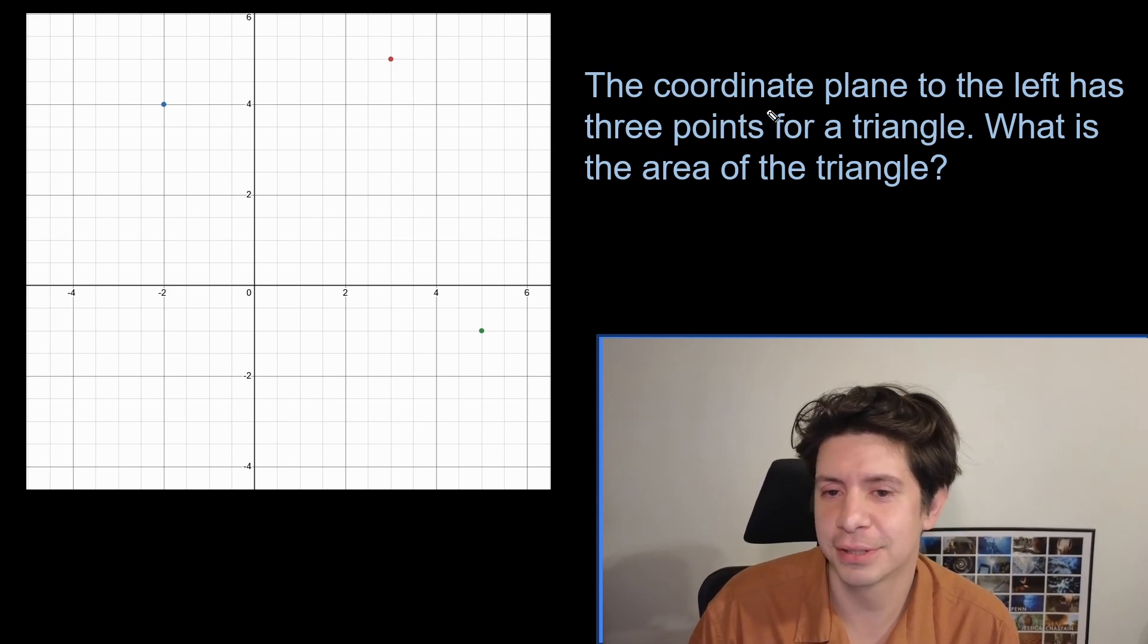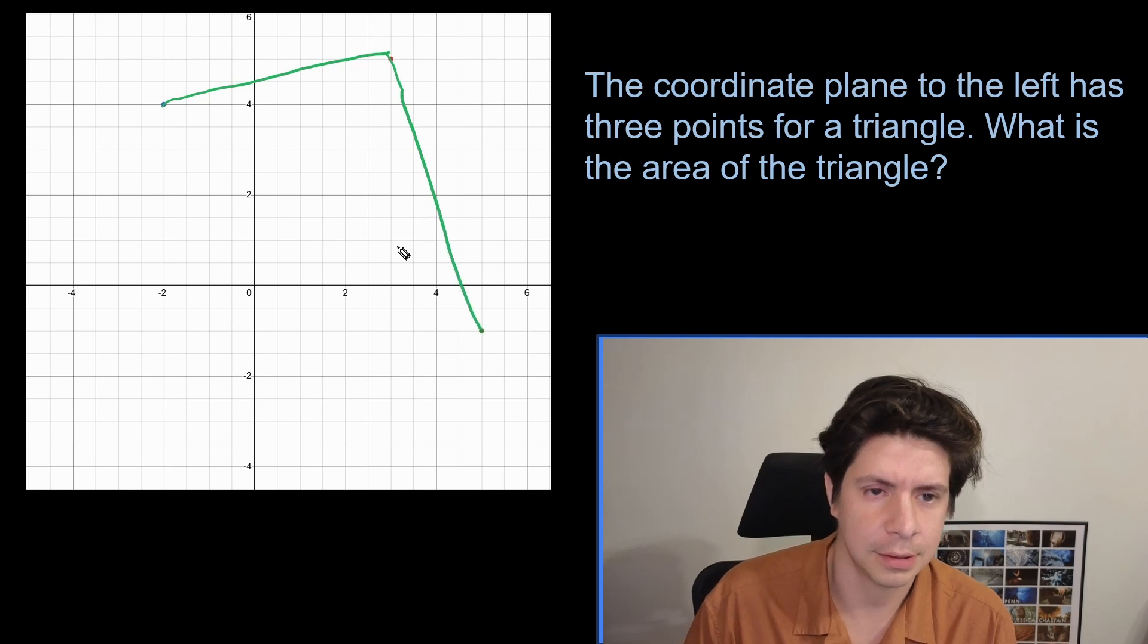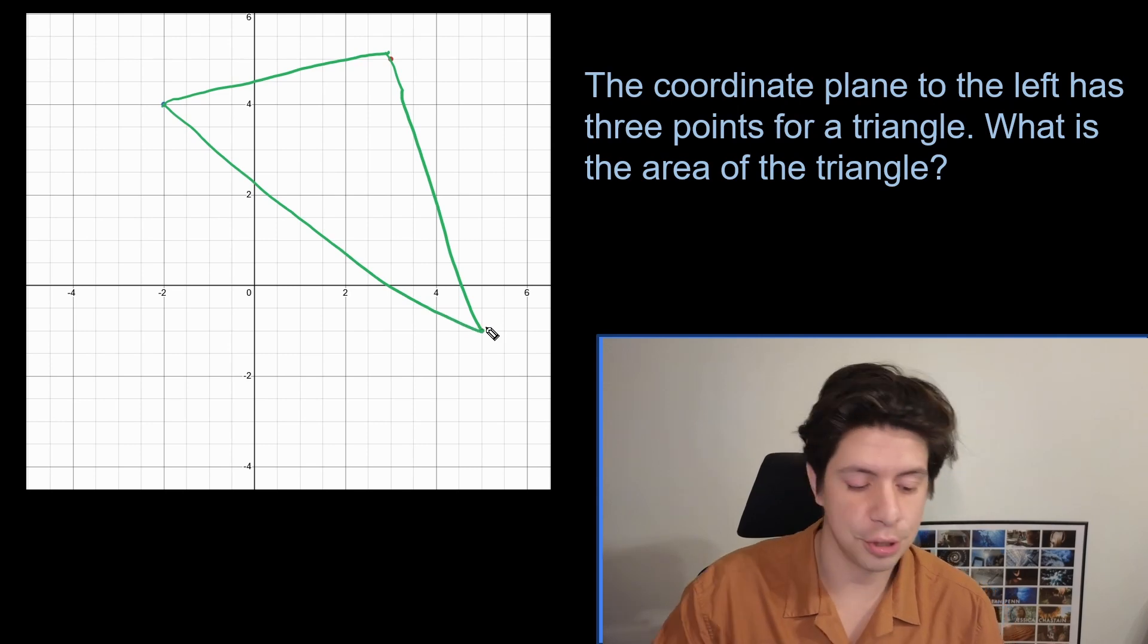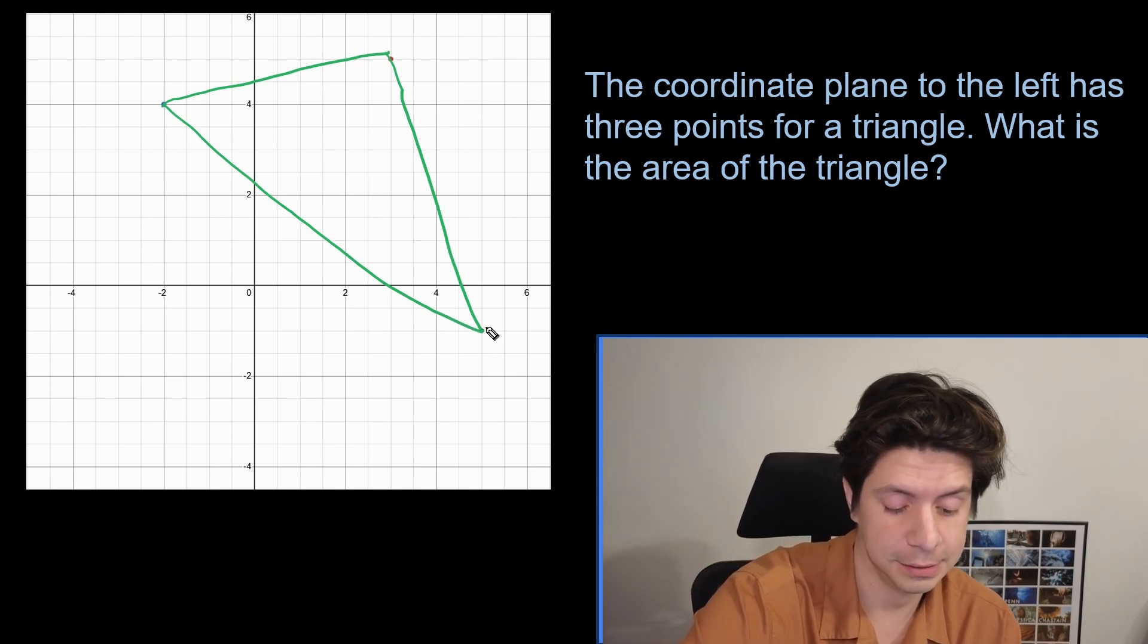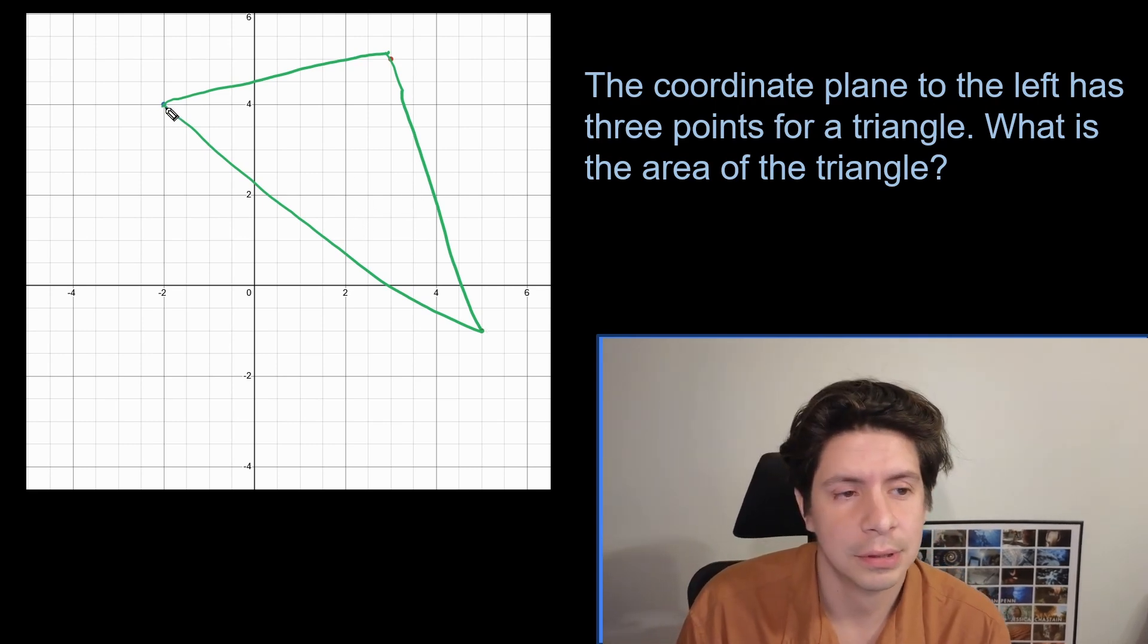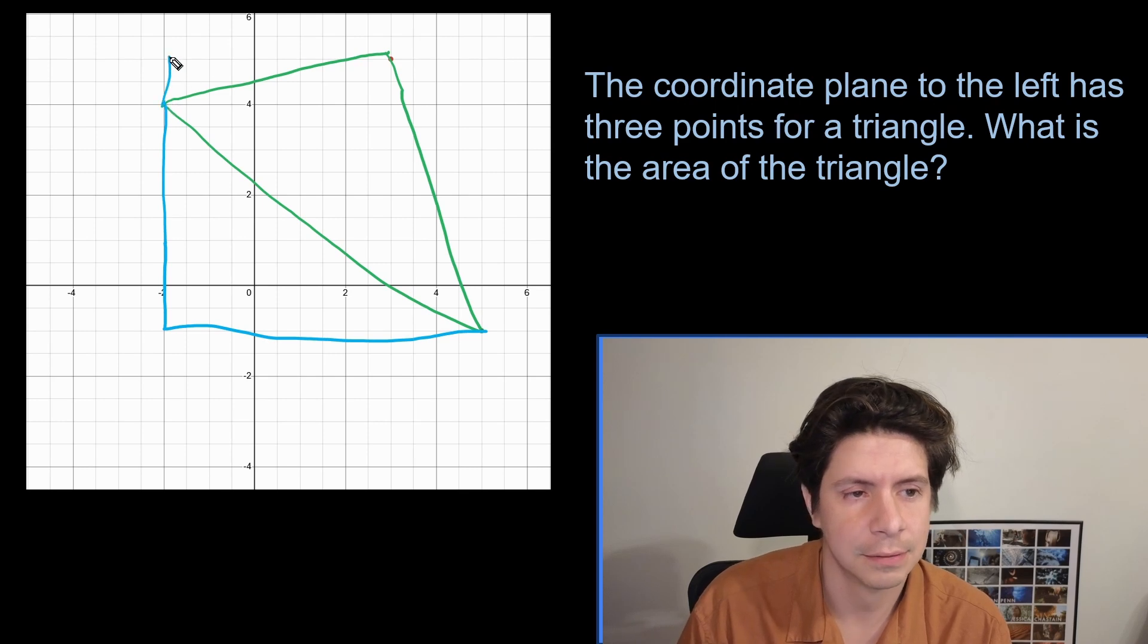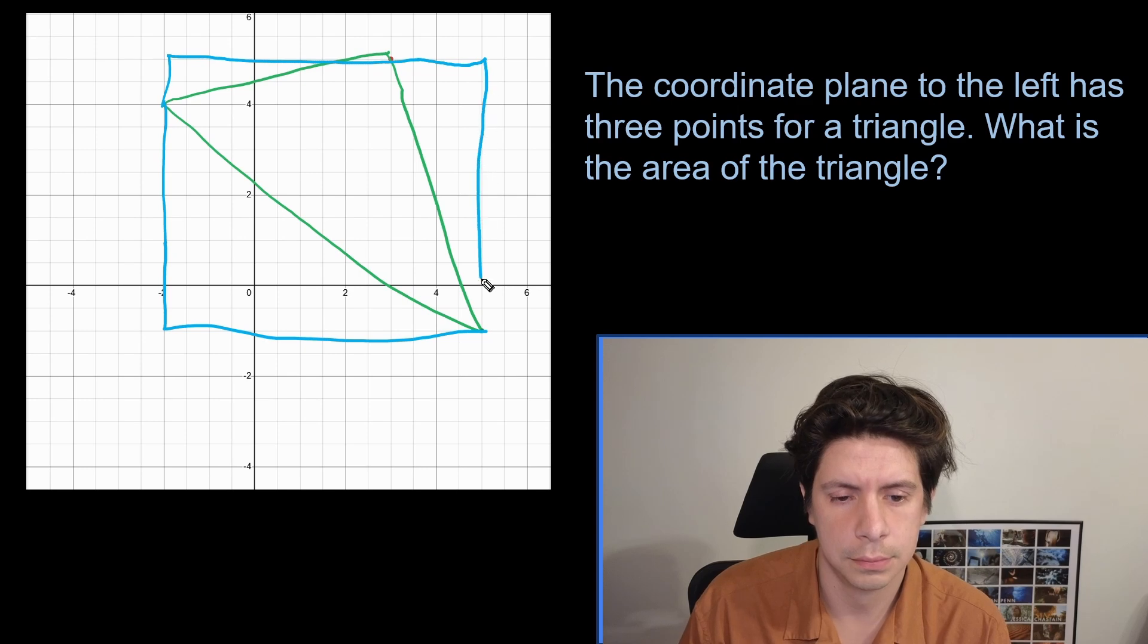So we have this one here. This is one of the trickier ones. Maybe the trickiest. The coordinate plane to the left has three points for a triangle. What is the area of the triangle? So we could draw out the triangle. It doesn't have to be beautiful, but it just has to be this. If it were just a straight up right triangle, this would be very straightforward, just base times height divided by two, but it's not, or at least it's hard to tell if it is, but I don't think it is. So what we're going to do is find how this is made into a rectangular prism. And within that rectangular prism, we can find right triangles to take them away.